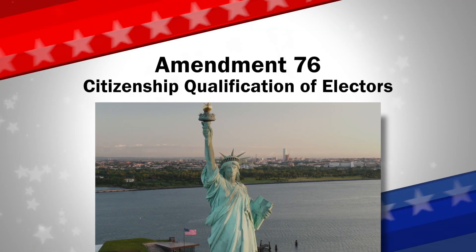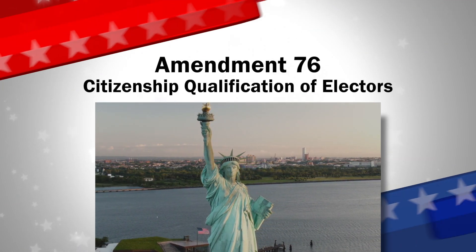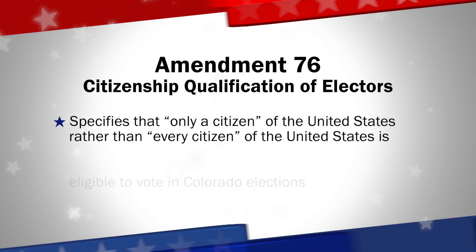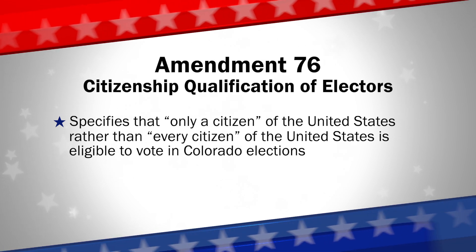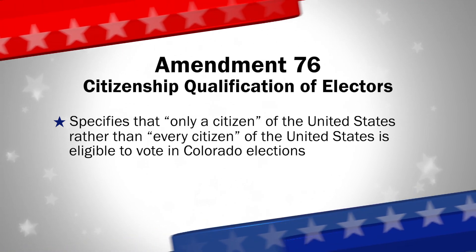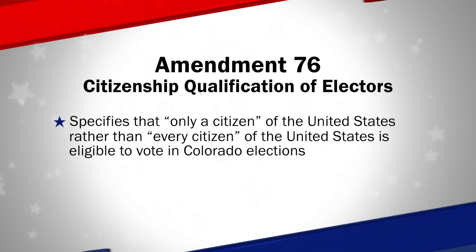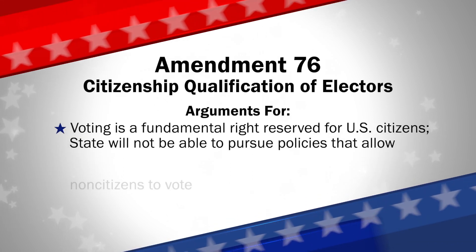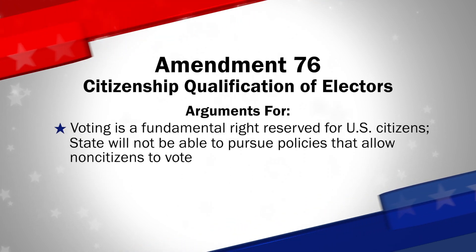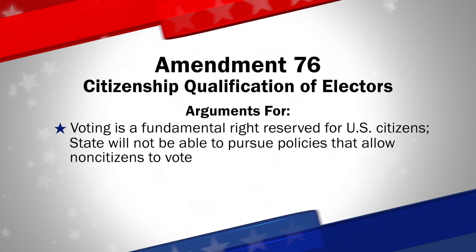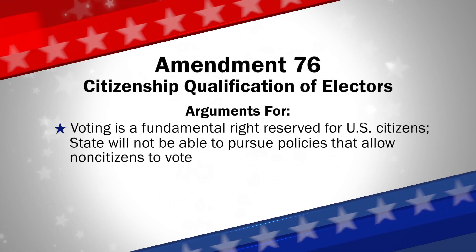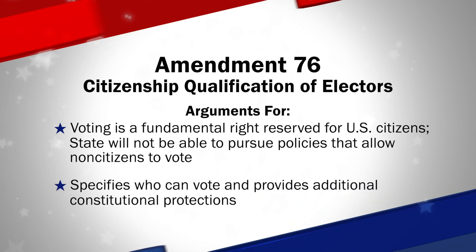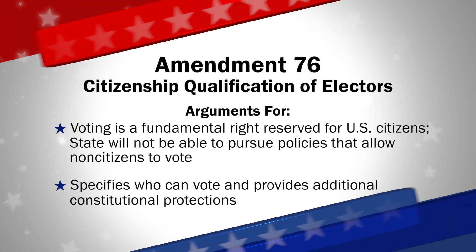Next up is Amendment 76, a citizen initiative to change the wording in the Colorado Constitution regarding voting. It would specify that only a citizen of the United States, rather than every citizen of the United States, is eligible to vote in Colorado elections. Those in favor of Amendment 76 say voting is a fundamental right reserved for U.S. citizens. Amendment 76 guarantees that the state will not be able to pursue policies that allow non-citizens to vote, and provides additional constitutional protections for Colorado's elections.